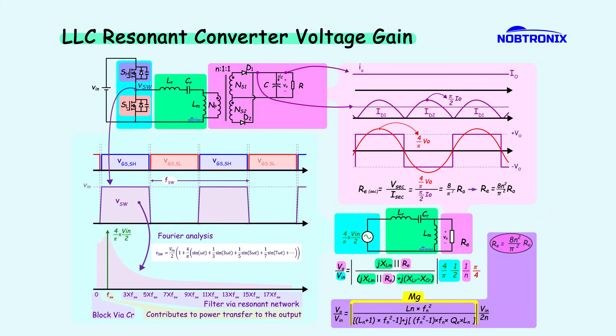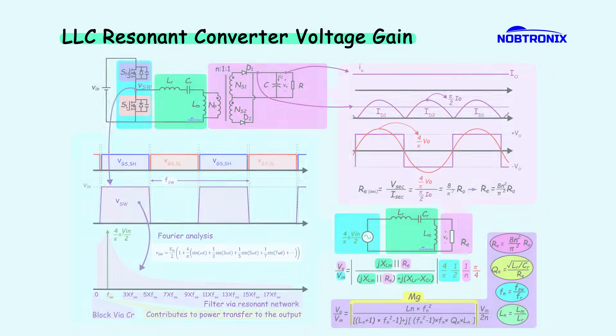Where RA is the equivalent load resistance, QE is the quality factor, FN is normalized switching frequency, and LN is the ratio of the magnetizing inductance to the resonant inductor. The output voltage is highly dependent on these parameters. In the next section, we'll explore how these factors influence performance.